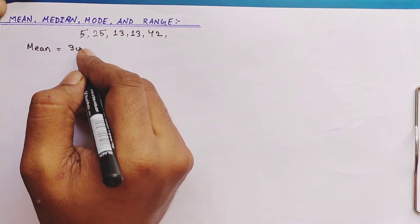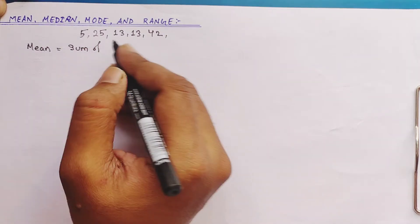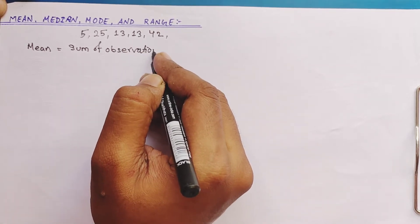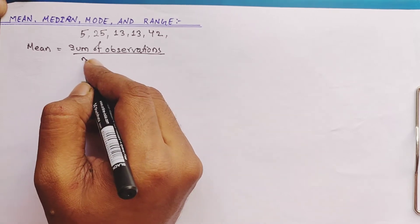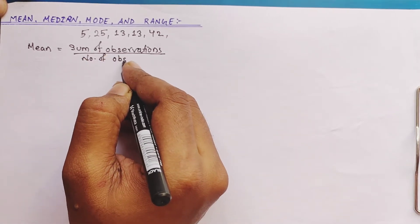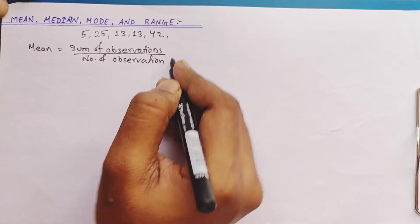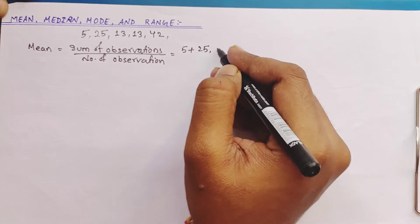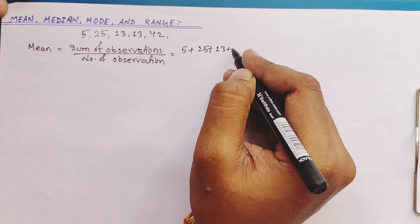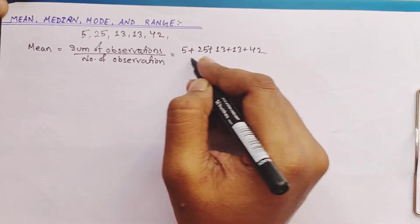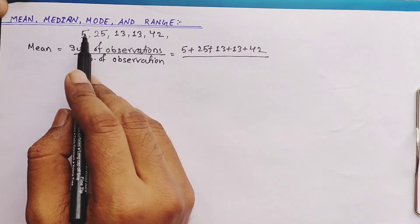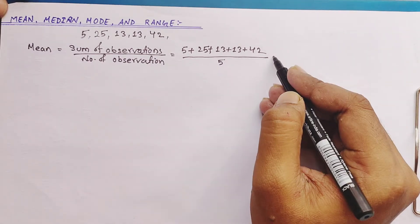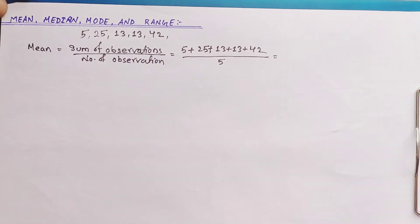First of all let us calculate the mean. Mean equals the sum of observations divided by the number of observations. So what we need to do is add all these items: 5 plus 25 plus 13 plus 13 plus 42, divided by the number of observations. Let us count: 1, 2, 3, 4, 5 — so divide by 5.